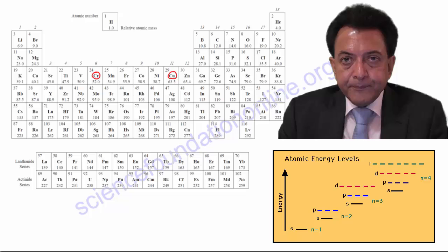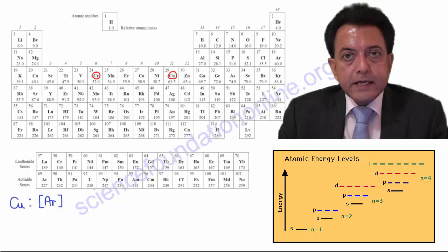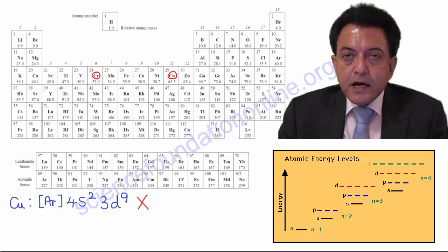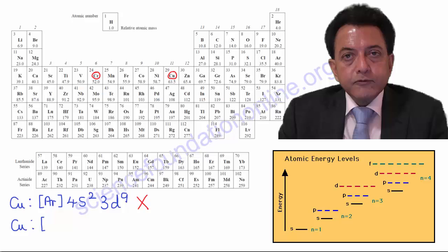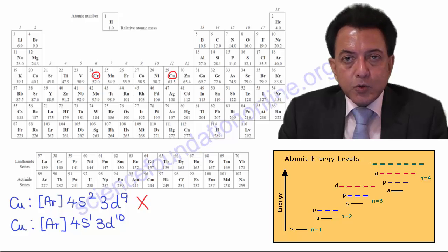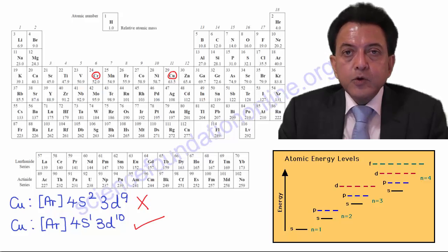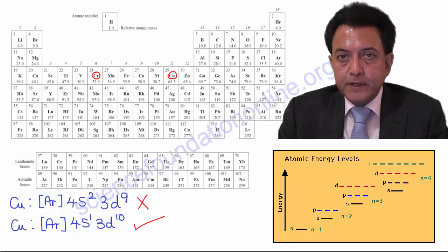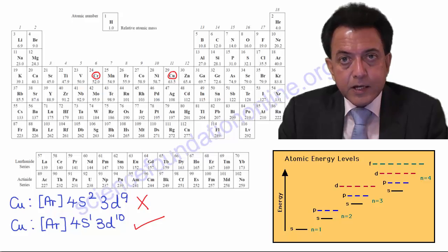Similarly, with copper, which is the other exception, its electron configuration is not [Ar] 4s2 3d9, but is instead [Ar] 4s1 3d10. And again, it's because with this being an exception, one of those 4s electrons has moved into a 3d orbital. You don't need to worry about explaining the reason for this, because there isn't a simple explanation that can adequately account for this.